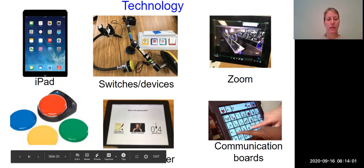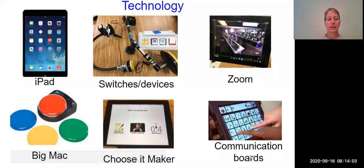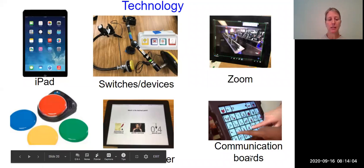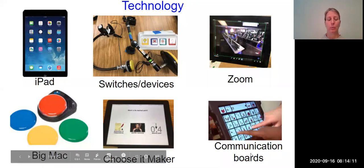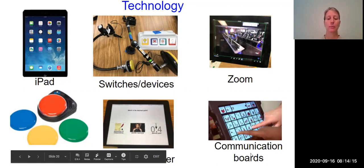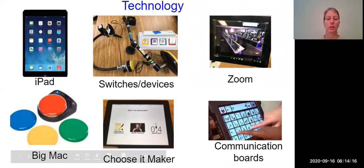We have our switches and devices. On the bottom left, the green, yellow, blue, and red device is called a Big Mac — we can record on that. Down in the middle is a program on an iPad called Choose It Maker, where we can put questions and answer choices in. And then we have communication boards on the right.